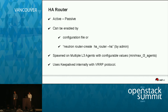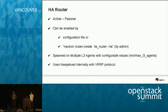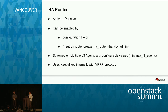Let me briefly describe what an HA router is. Normally, an HA router is used in cases where you have three or four network nodes with L3 agents running, and you want your router to be scheduled on multiple L3 agents — one will be active. If one network node goes down, the other will come up and take over the L3 functionality.